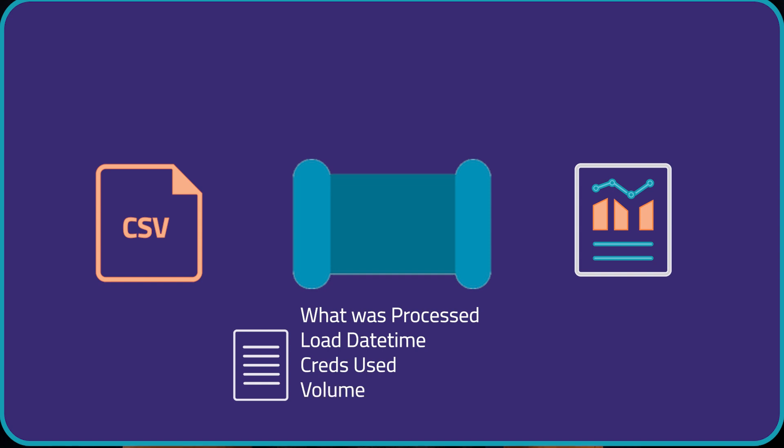We want to track volume of data in the file so we can alert if it's outside expected parameters, and duration of the process to make sure it's not getting hung up or slowing down over time. And that's just the start — you'll probably come up with more as your pipelines grow more complex. You also want error handling, so if auditing detects a problem it can handle it, continue with other processes, alert responsible parties, or attempt a rerun.